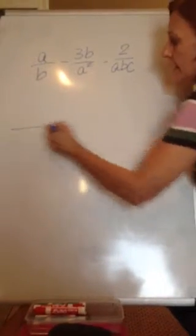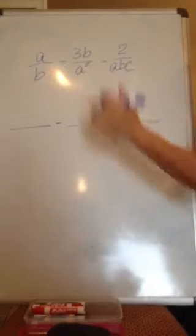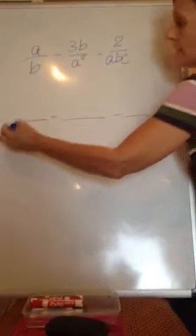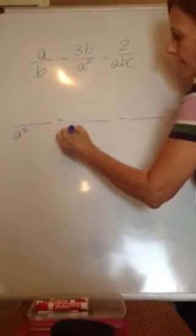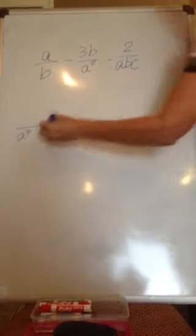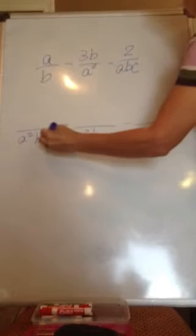The only coefficient we have is 1, so we do not have to put any numbers in the denominator. Then let's look at our A's. The highest exponent is A squared. So that will be in our denominator. Our highest exponent for B is B, and we have 1C.